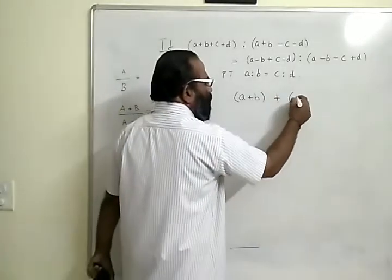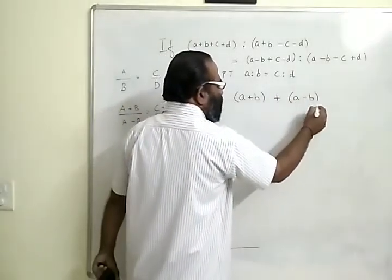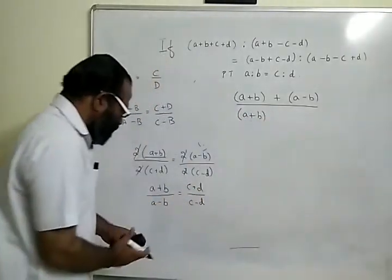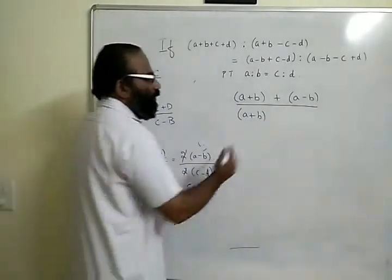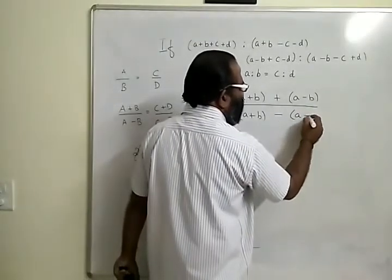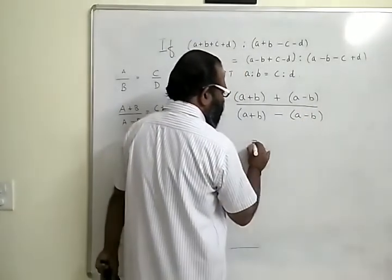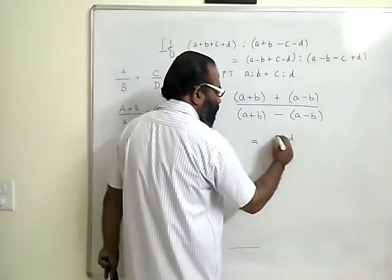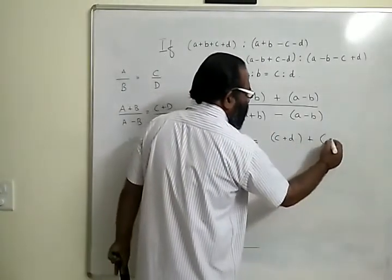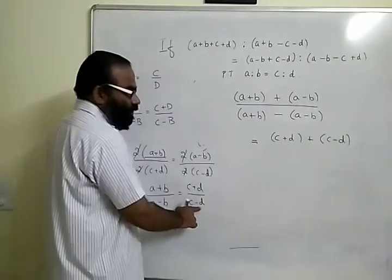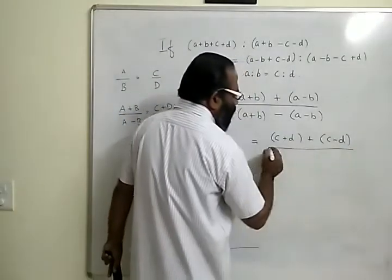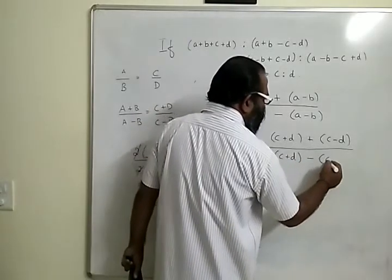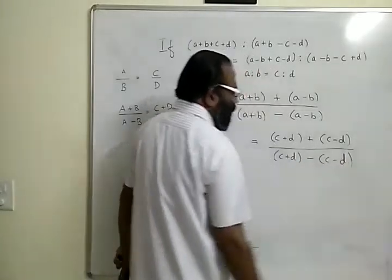This equals c plus d plus c minus d, c minus d is the denominator, by c plus d minus c minus d.